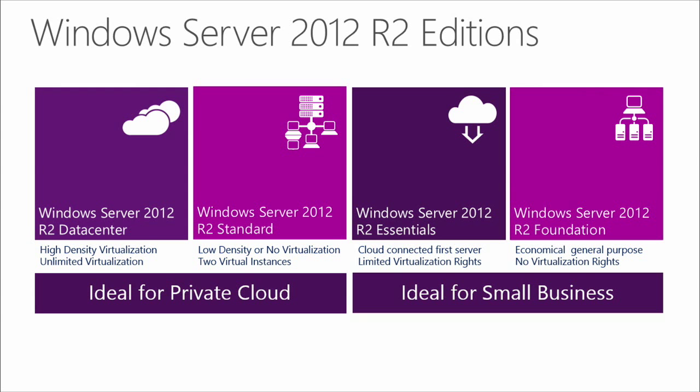Windows Server 2012 R2 is available in four editions designed to suit a variety of customers' needs. Data Center and Standard are ideal for private cloud, while Essentials and Foundations are optimal for small businesses. Windows Server 2012 R2 Data Center will continue to be the ideal edition for highly virtualized private and hybrid cloud environments, providing customers with unlimited virtualization rights and all of the enhanced and new features of Windows Server 2012. The licensing for Data Center will continue to follow a processor plus CAL model.